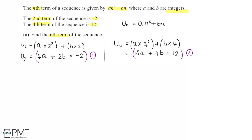Doubling equation 1 gives us 8a plus 4b equals minus 4 — we've multiplied 4a, 2b, and minus 2 each by 2, giving equation 3. Now with equation 3 and equation 2 both having 4b, if we do equation 2 subtract equation 3, the 4b terms will cancel, leaving us with just the a terms to solve.